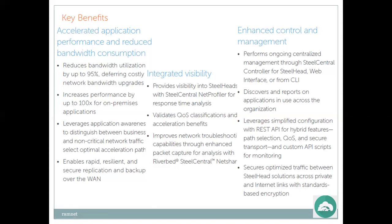Other Riverbed benefits: validates QoS classifications and acceleration; improves network troubleshooting through enhanced packet capture with RiverBed SteelCentral NetCharts; performs ongoing centralized management through SteelCentral Controller for SteelHead via web interface or CLI; discovers and reports applications in use across organizations; leverages simplified configurations with REST API for hybrid features, path selection, QoS, secure transport, and custom API scripts; and secures optimizer traffic between SteelHead solutions with standards-based encryption.